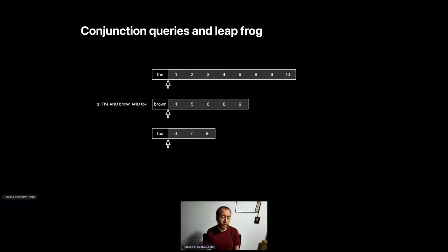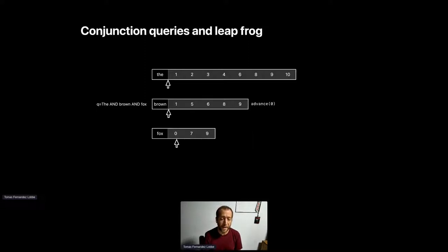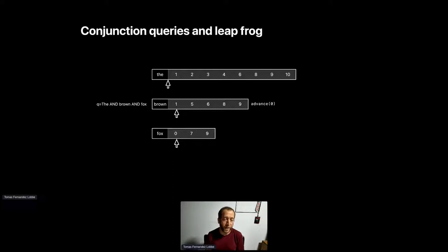Lucene uses two main methods: next_doc, which positions the cursor of the iterator to the next available document in a posting list, and advance, which takes a target as an argument and positions the cursor at the document with that ID, or the next available one if it's not present. Lucene sorts the posting lists by cost, starts with the cheapest list, calls next_doc, and then calls advance on the other lists.